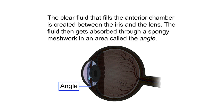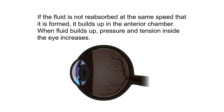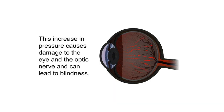The clear fluid that fills the eye is then absorbed through a spongy meshwork in an area called the angle. If the fluid is not reabsorbed at the same speed that it is formed, it builds up in the anterior chamber. When fluid builds up, pressure and tension inside the eye increases. This increase in pressure causes damage to the eye and the optic nerve and can lead to blindness.